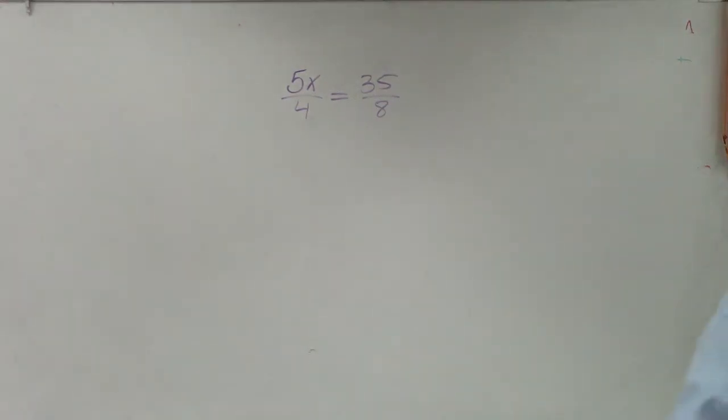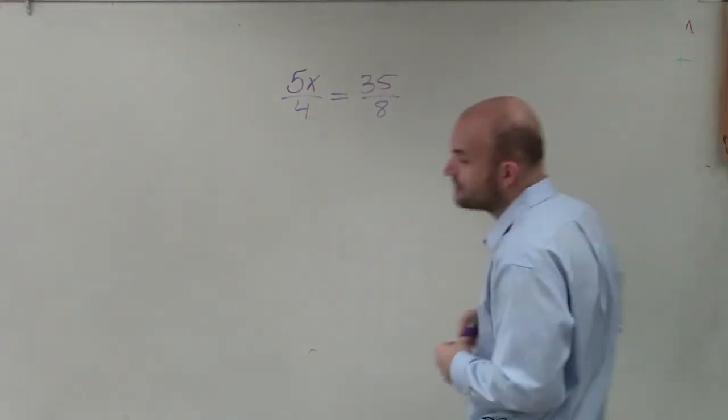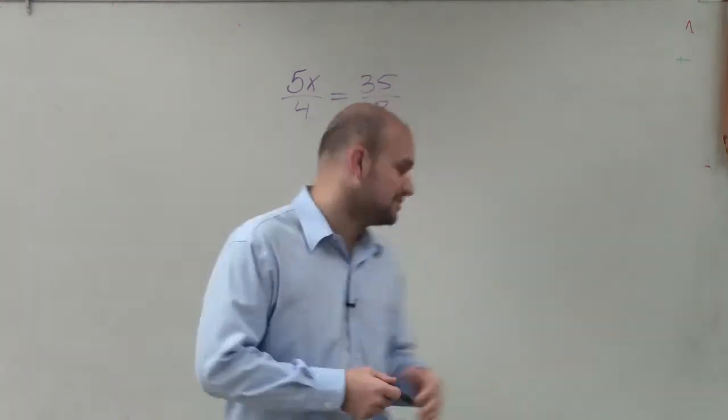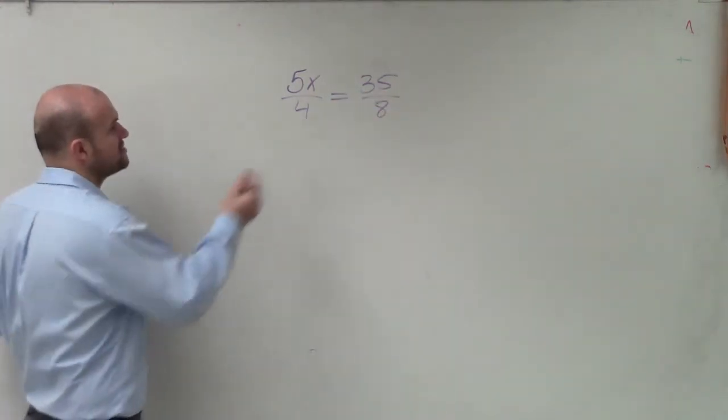So in this case, what I have is the proportion 5x over 4 is equal to 35 over 8. And again, we want to be able to solve. So to go ahead and solve, I can apply cross multiplication.